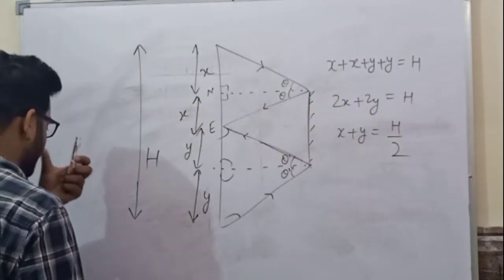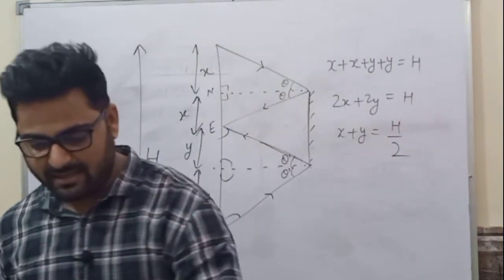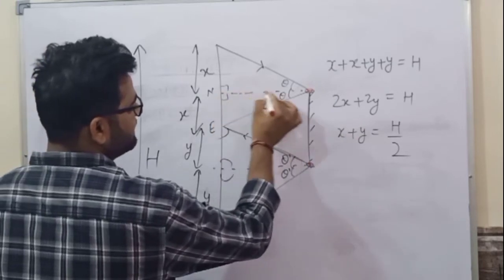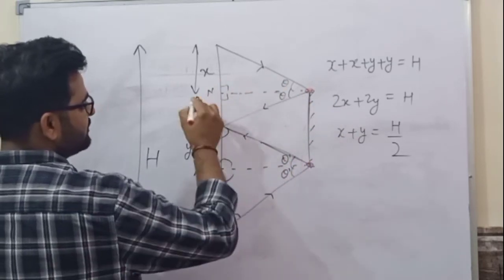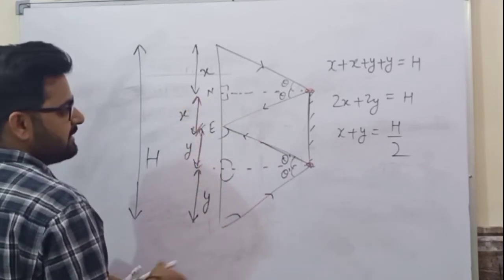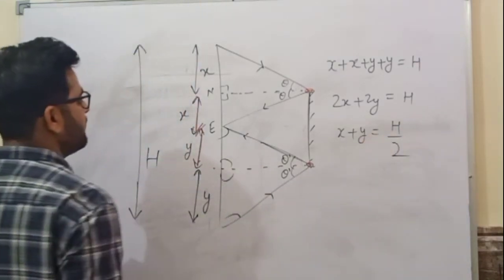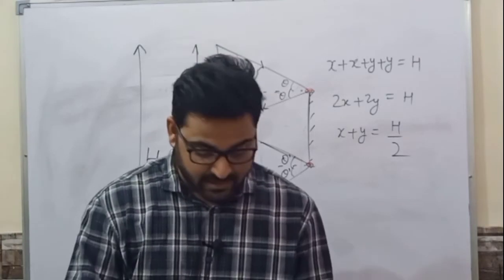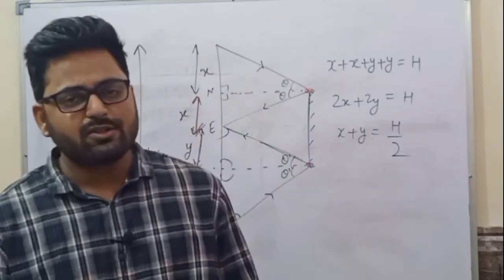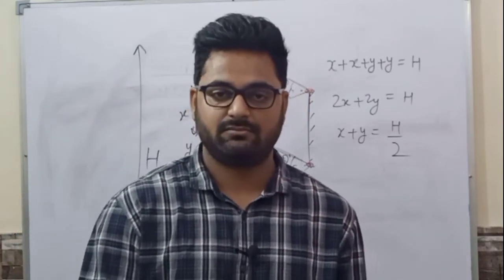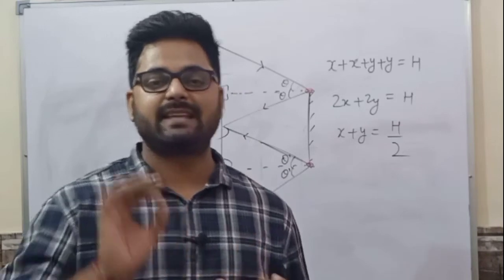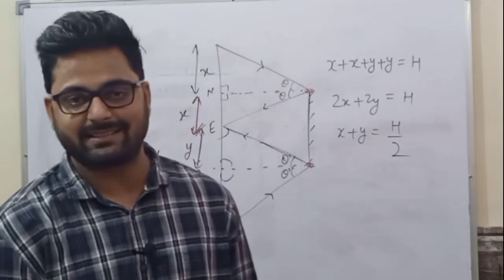So the length of the mirror from top to bottom — x plus y — equals h by 2. The minimum length of the mirror required is half the height of the person. So if a person of height h wants to see his full image in front of a plane mirror, the minimum length of the mirror required is h by 2. He only needs a mirror half his size to see his whole image.